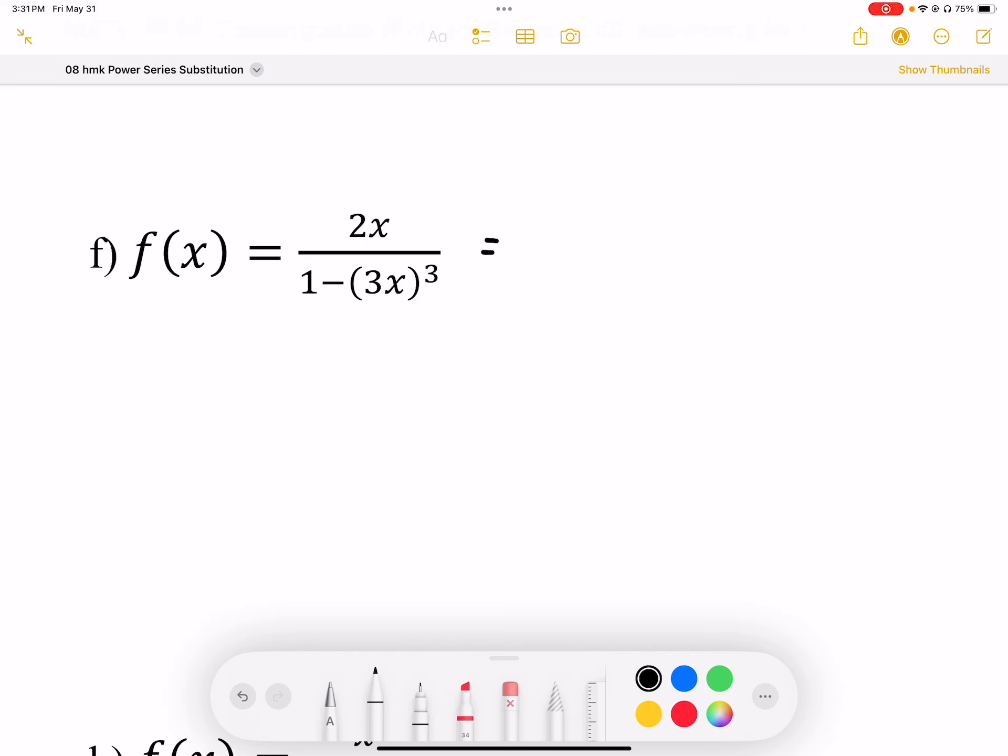For question f, we want to be able to factor out some parts here. So that 2x is going to be, we can factor that out. So we end up with 2x, and then what's left over should be my 1 over 1 minus x.